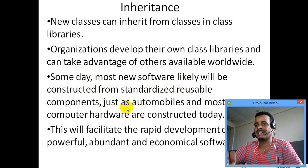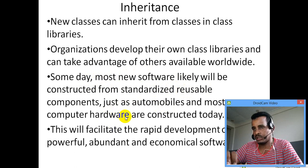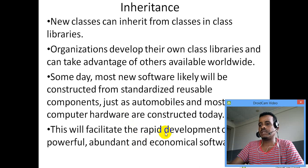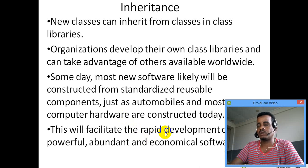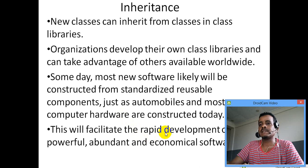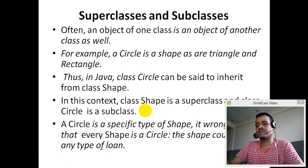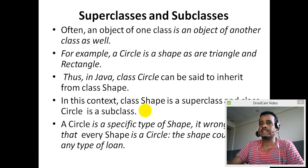Here is an example of inheritance: automobile, computer hardware. We can create a new application and use it to develop a new application. Because of the superclass and subclasses, the superclass is not an object of just one class — it is also an object of another class.